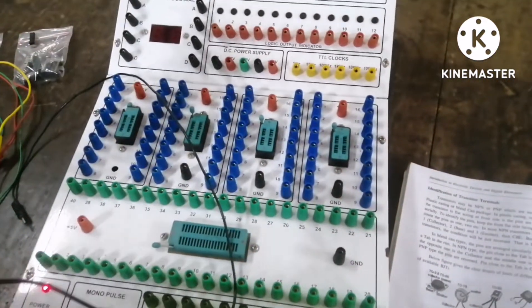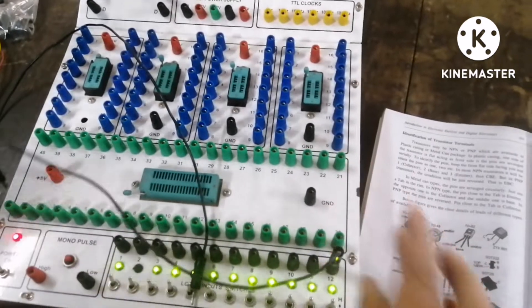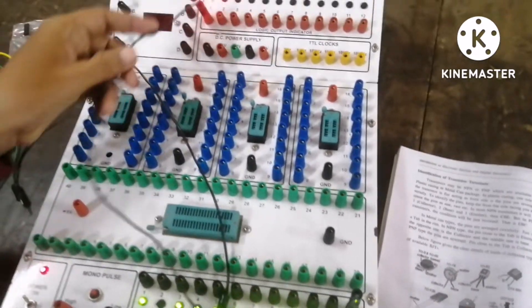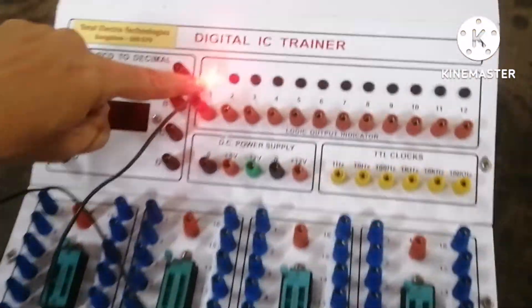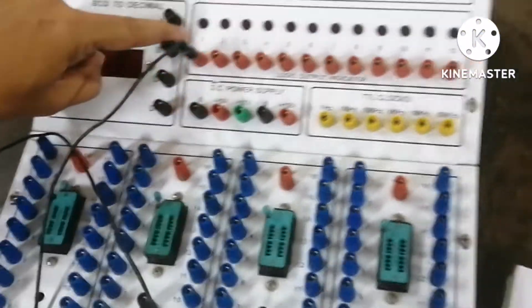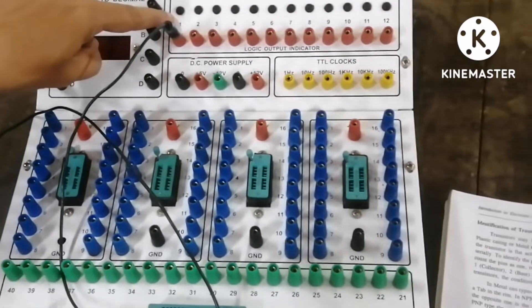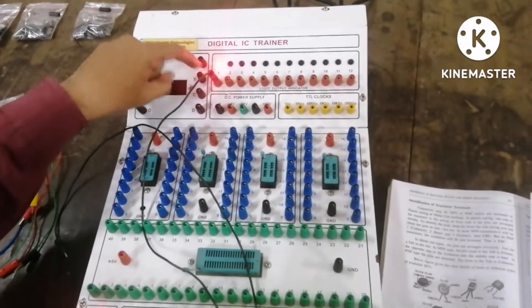With the help of the patch cord, I will connect input to the output. So you can see here, the red light indicates that it is high. If I make it low, it will be in the off condition. So high and low we can check.